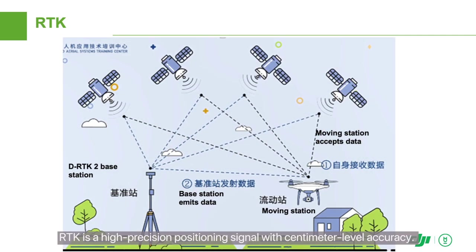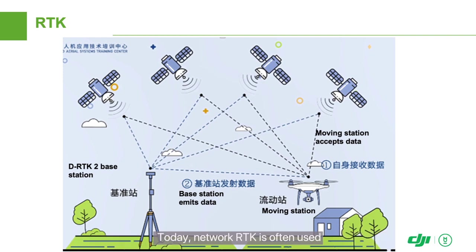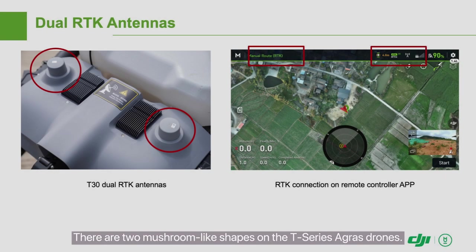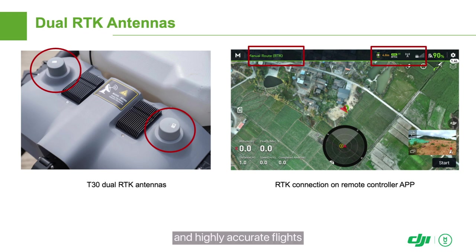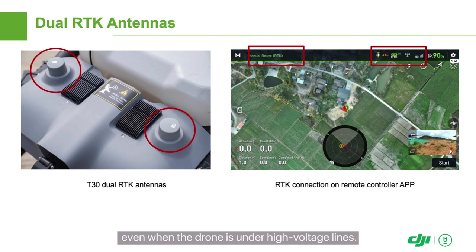For much more accurate flights, RTK is required. RTK is a high-precision positioning signal with centimeter-level accuracy. Network RTK is often used and a cellular data connection is required for communication. The two mushroom-like shapes on T-Series Agris drones are the RTK antennas, which enable the orientation function and highly accurate flights.